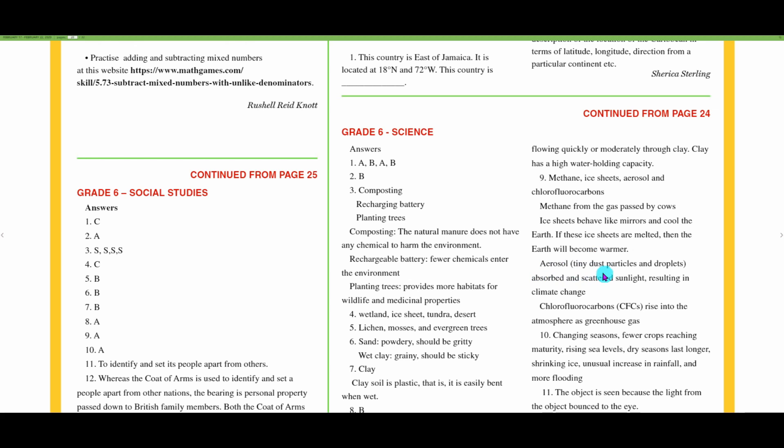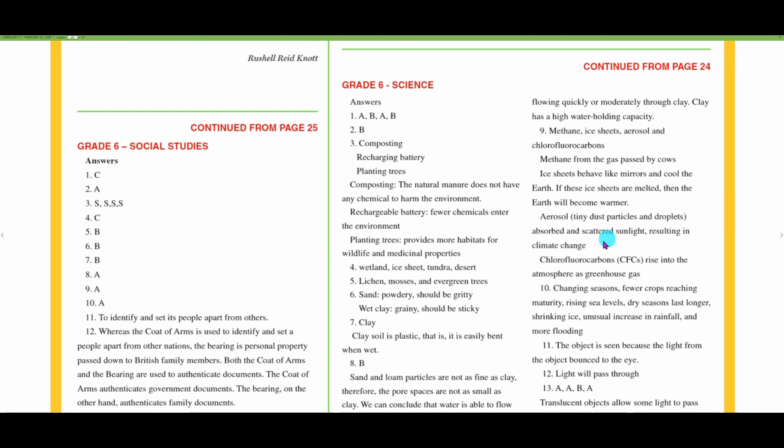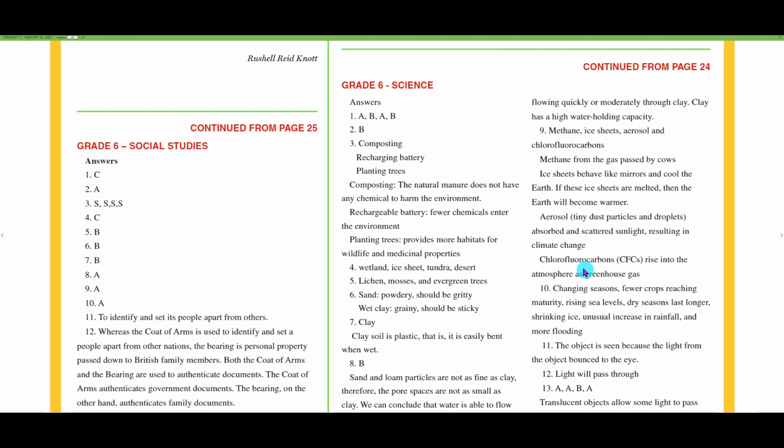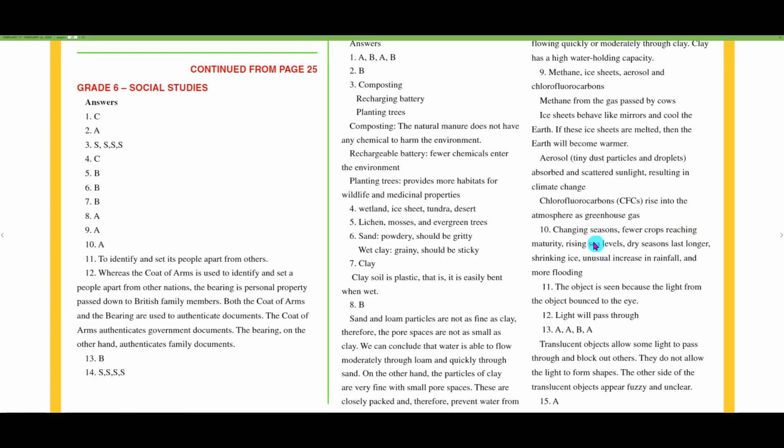Aerosols are tiny dust particles and droplets. If we add more aerosols, we're adding more dust particles in the air. These absorb and scatter the sunlight resulting in climate change. CFCs, chlorofluorocarbons, rise into the atmosphere as greenhouse gases. For example, air conditioners and refrigerators use gases in them, and some of these gases are chlorofluorocarbons that cause the greenhouse effect.